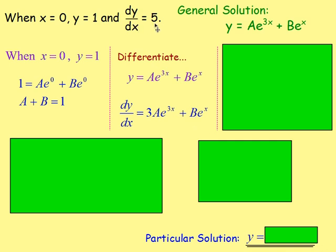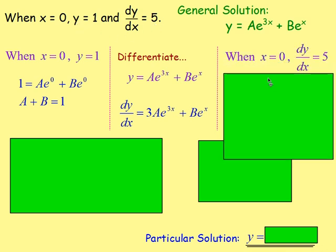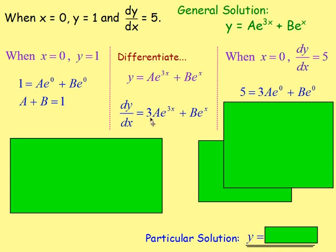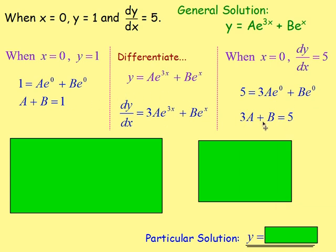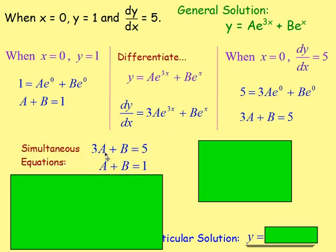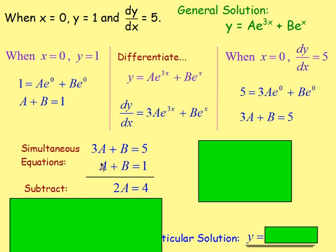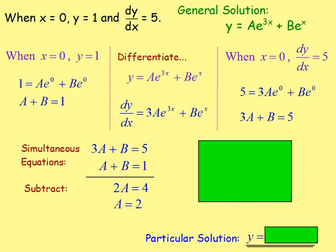Now we replace dy/dx with 5 and x with 0. That gives 5 equals 3a·e^(0) plus b·e^(0), which simplifies to 3a + b = 5. We now have two equations: 3a + b = 5 and a + b = 1. Subtracting the equations, 3a − a = 2a, the b's cancel, leaving 4. Therefore a = 2.